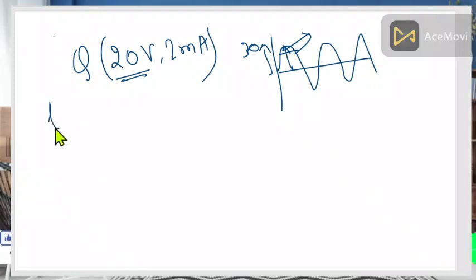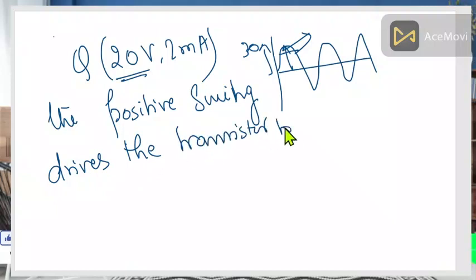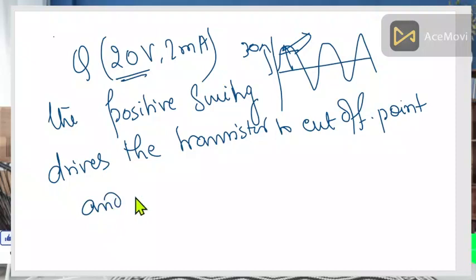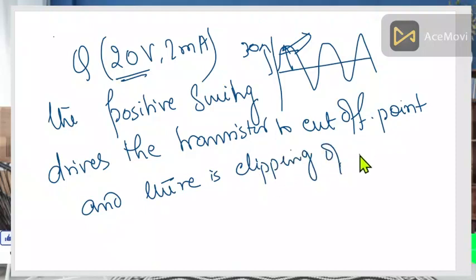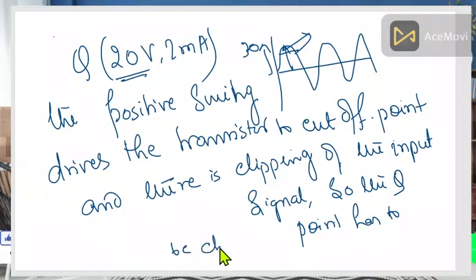This means the Q-point has to be relocated. The positive swing drives the transistor to the cutoff point and there is clipping of the input signal. So the Q-point has to be changed — this Q-point is not proper. Depending on the Q-point, you have to apply the signal; or if you have a signal of fixed amplitude, you have to check whether the Q-point is proper or not.